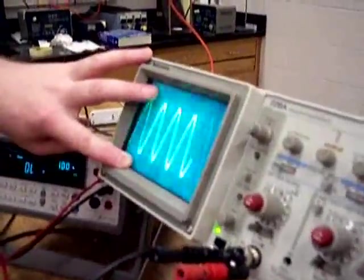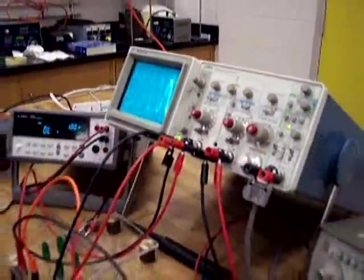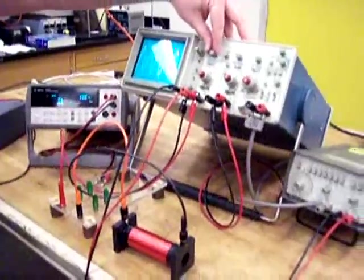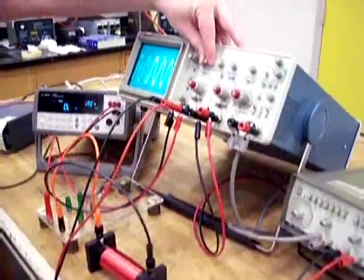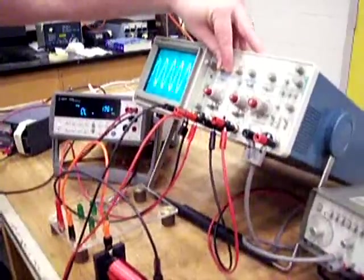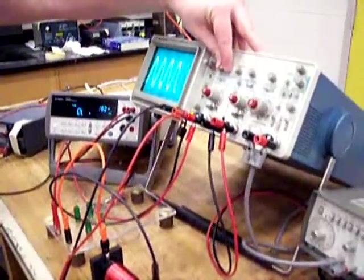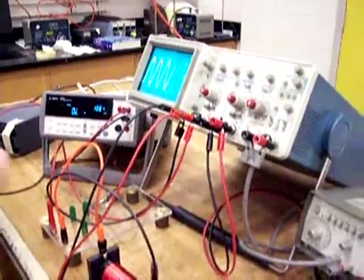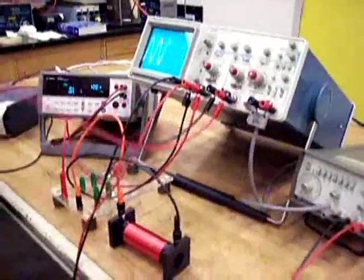But not nearly as much as before. So now right away, you can grab V source, which will be on this channel one here. Now let's find the voltage across the solenoid for channel two.